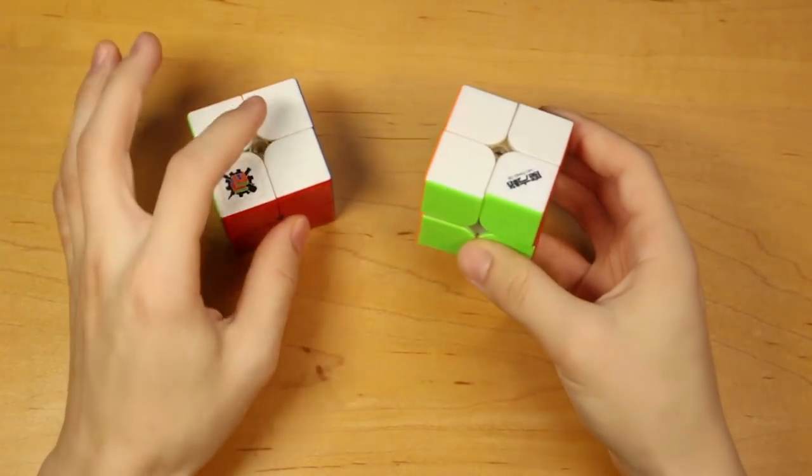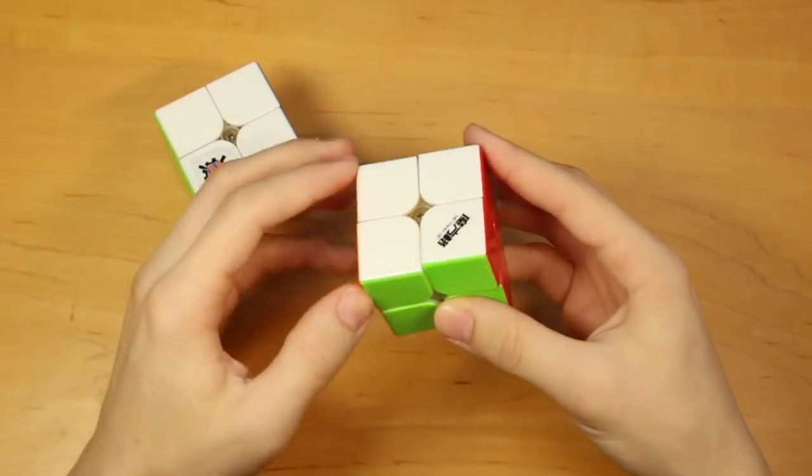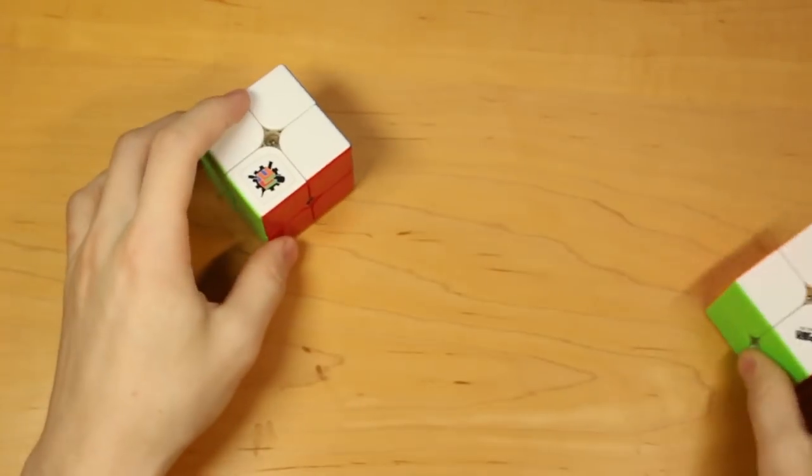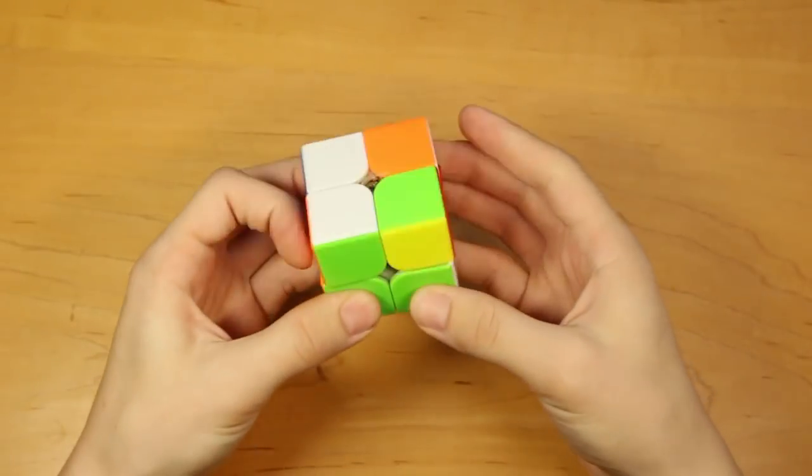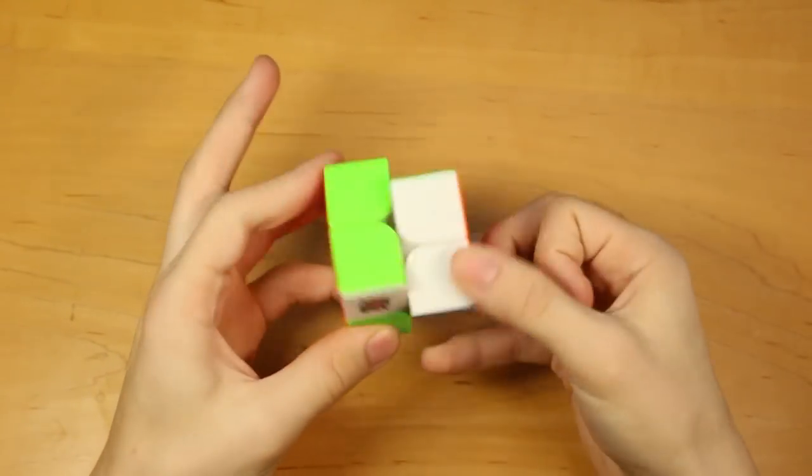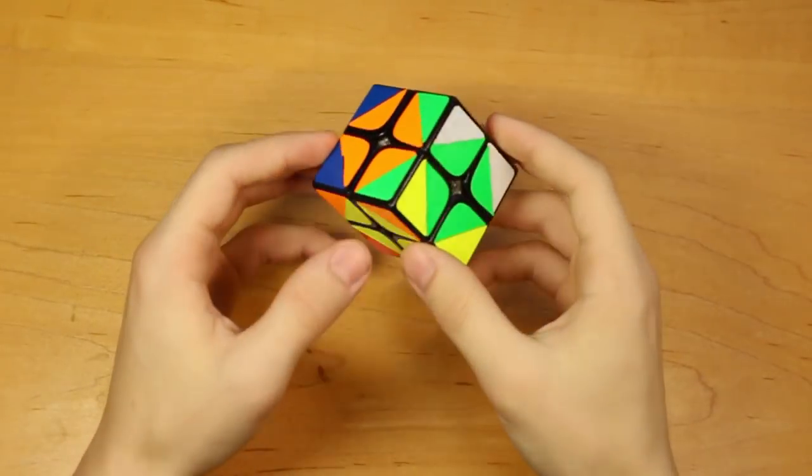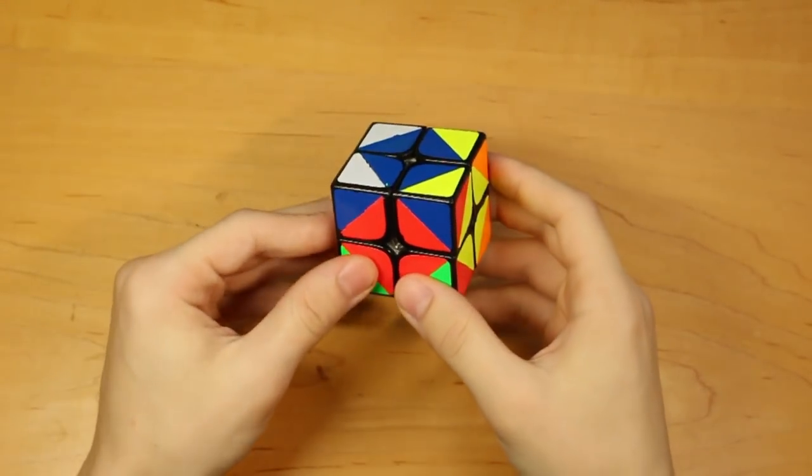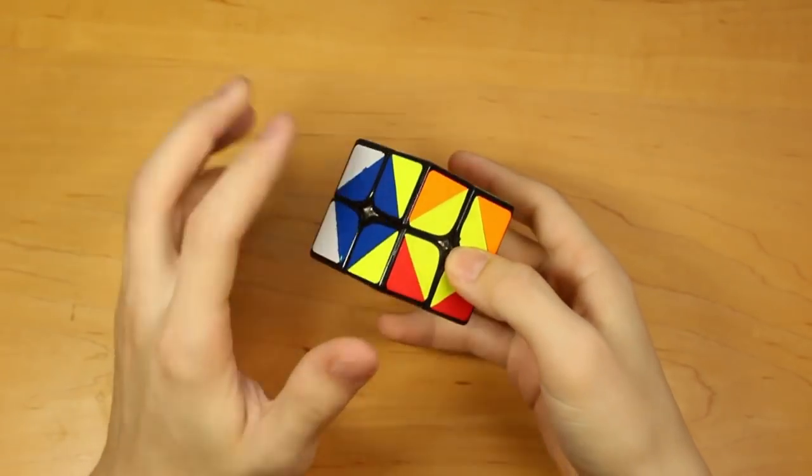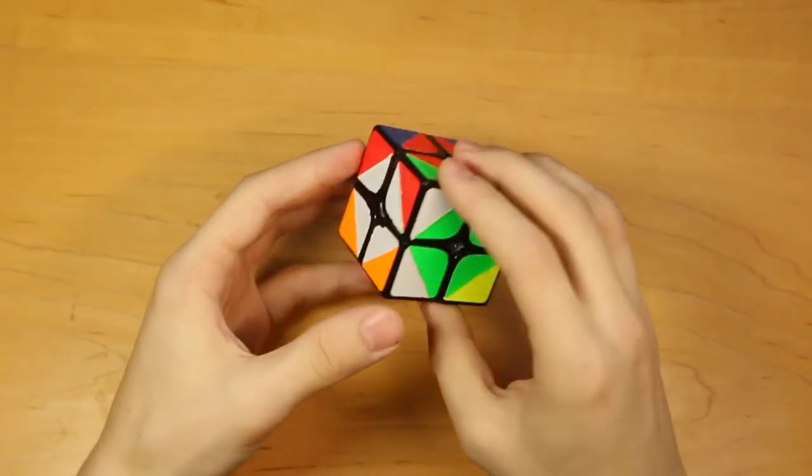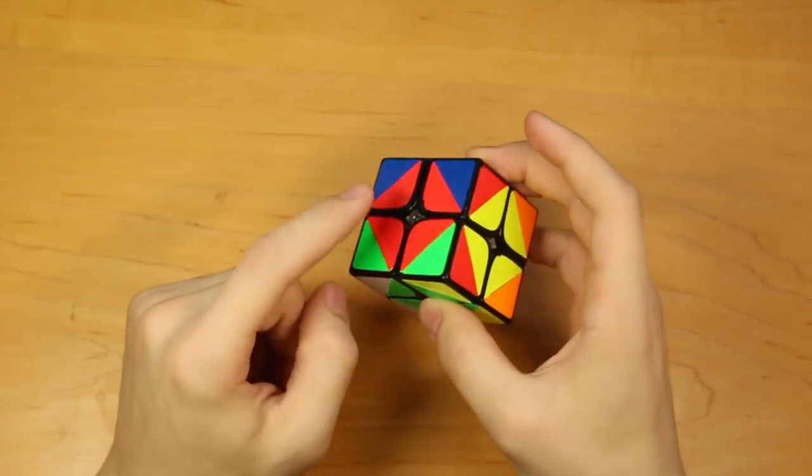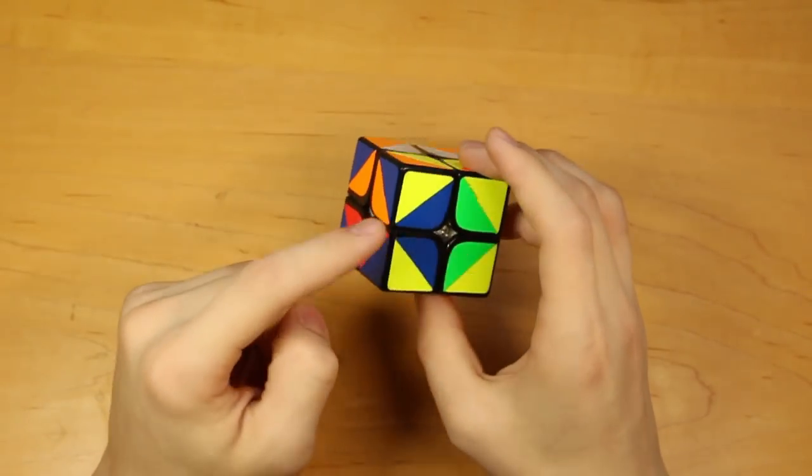And my two Qiyi 2x2s, I think these are both Valks, I'm not sure, but this one is unmagnetized and not good. And this one is my main, the Cubicle Labs Valk 2M. So yeah, pretty cool. And this doesn't really count as a legal 2x2, but this is a 2x2. So this is a sticker mod that I made, and it has two solved positions, which is where the centers are solved and when the outside corner parts are solved.